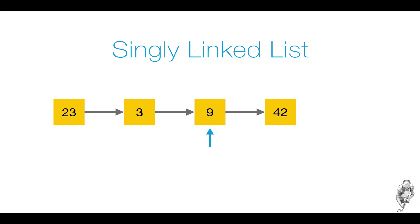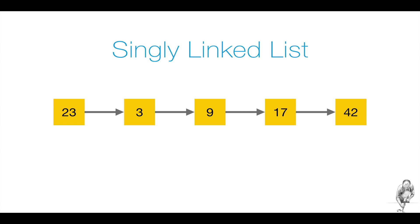Inserting an element after the current element is relatively easy with a singly linked list. You create a new node containing the new element. You link to the new element 17 from the current element 9. You add a link pointing from the new element 17 to the existing element 42, and you are done. Inserting the same element before the current element is generally possible in a singly linked list, but usually not very efficient. It will require navigating to the previous element starting from the beginning of the list.